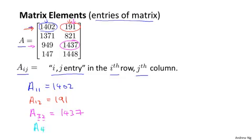And finally, A41 refers to this one, the fourth row, first column, which equals 147.